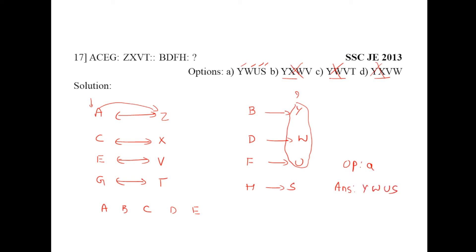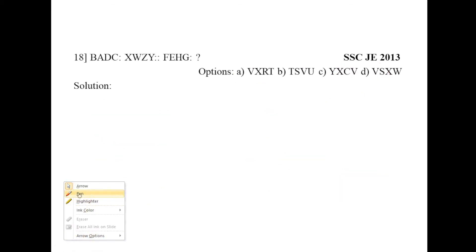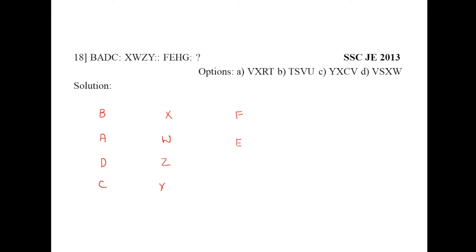Many times if you know one or two letters, just check the options — whichever don't match, remove those options and you'll be left with the suitable one. Moving to question 18, written in column-wise direction: B A D C, next X W Z Y, next F E H G, question mark. Again I can see there's a complementary series relationship here — A and Z appear together.